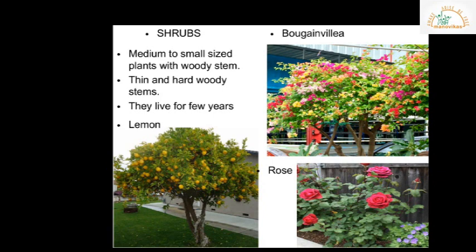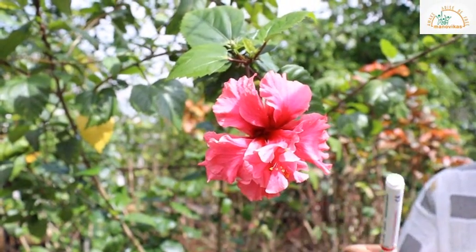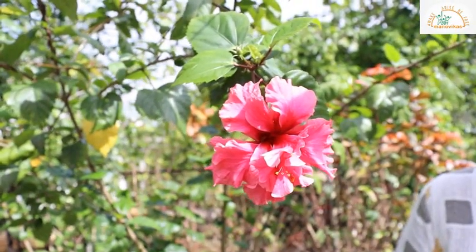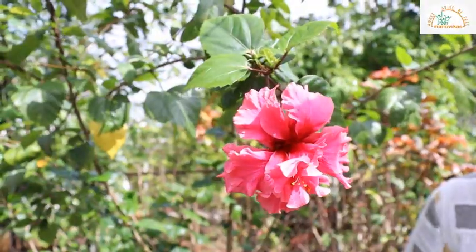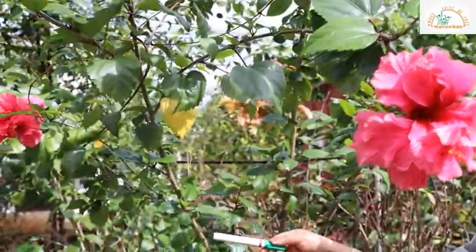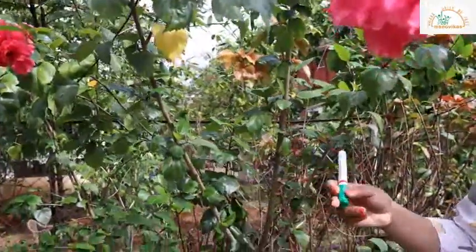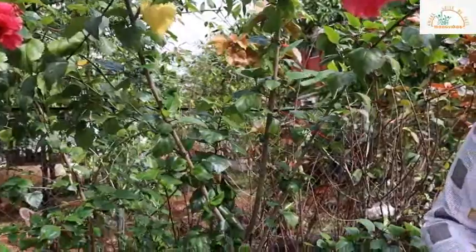If you notice the stems of a shrub, you will see that they do not have only one stem but many stems. Hibiscus is an example of a shrub. It has thin, hard, woody stems and is smaller than trees.